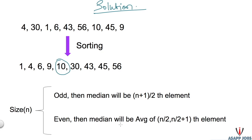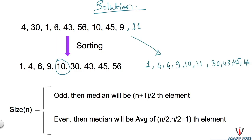If the sequence size is even, the median will be the average of the n/2 and (n/2 + 1) elements. For example, if we add one more element, 11, then after sorting we take the average of the fifth and sixth elements — 10 and 11 — which gives 10.5. So in this case our median is 10.5.